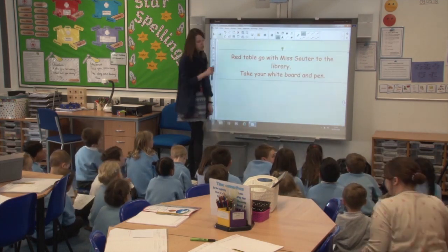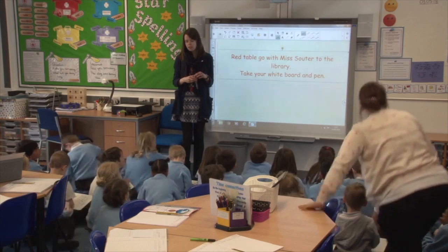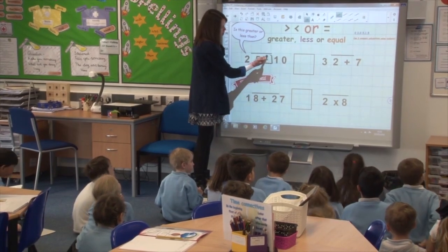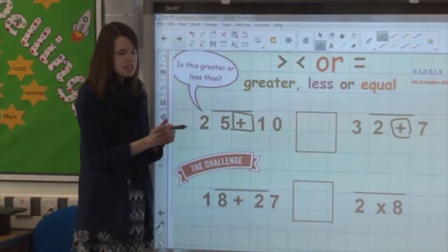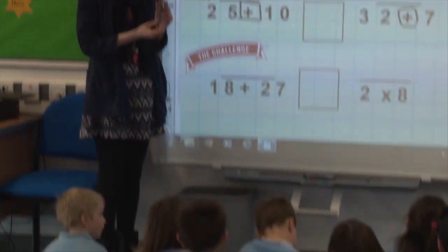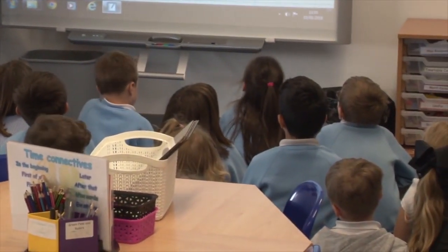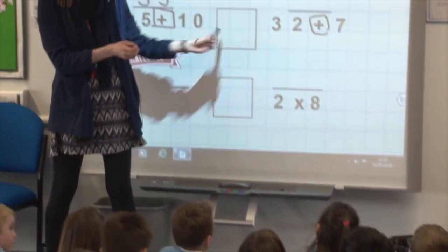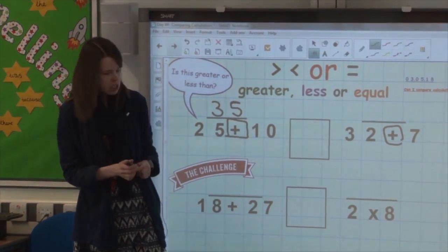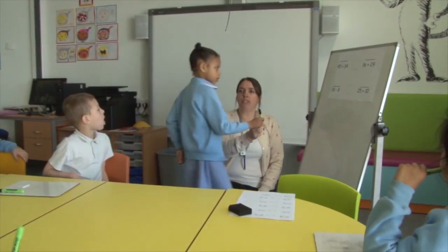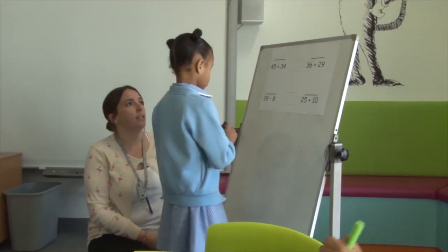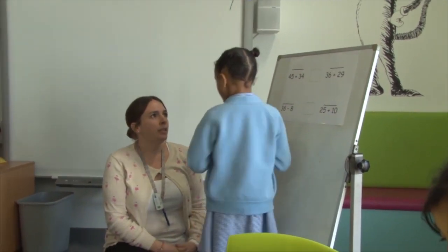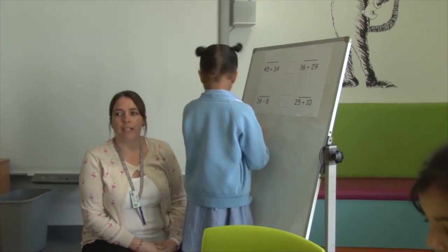Okay, now I would like red group to stand up with your whiteboard and pen and go out with Miss Souter. You are going to work out the calculation — this one is an addition one. Put the number above. So what is twenty-five add ten? Thirty-five. Well done. Then work out the other calculation and put in the symbol. If you are finding it okay, go on to the challenge at the bottom. You guys can do it on your whiteboards as well. So we are going to have forty-five plus thirty-four. How would we work that one out? Partition and recombine. That is perfect.